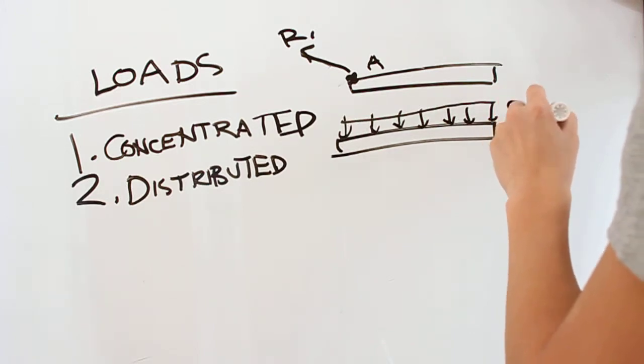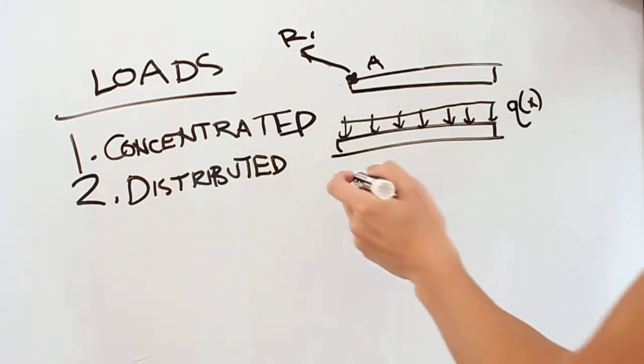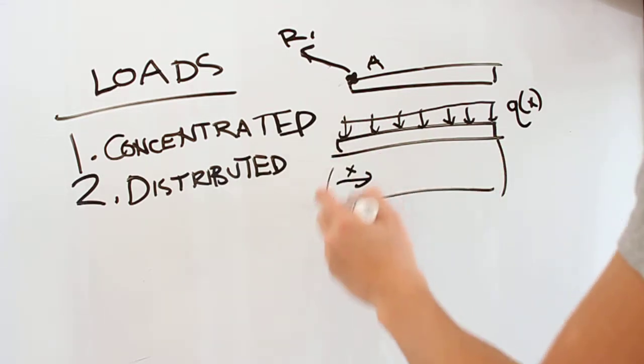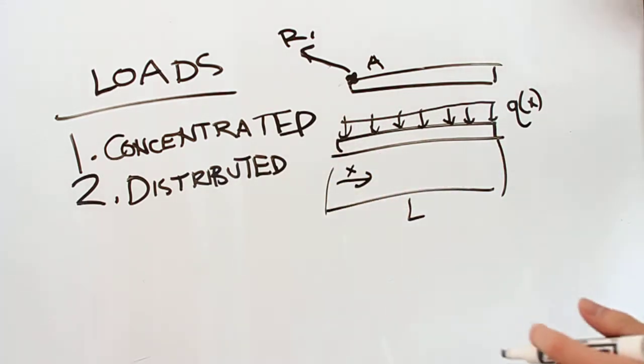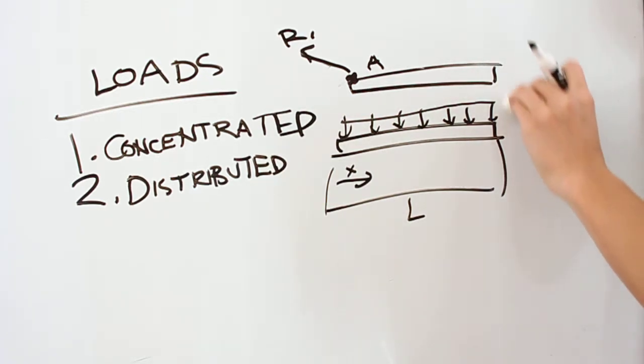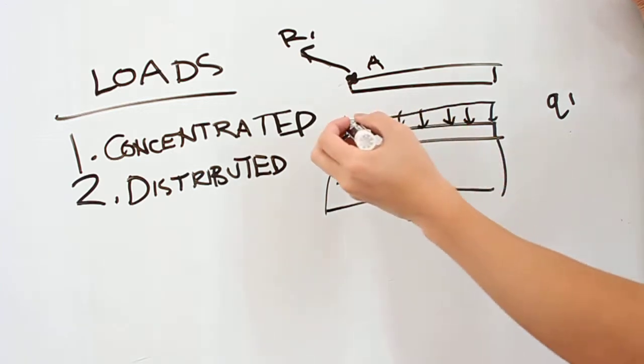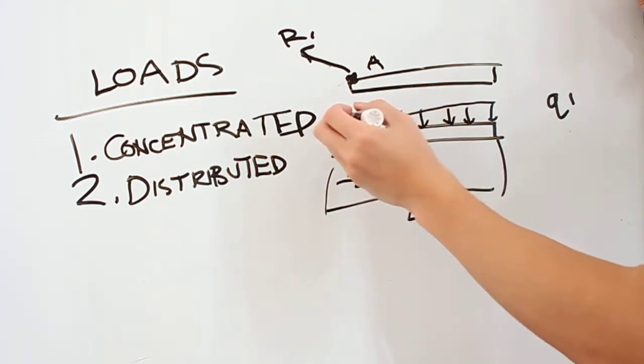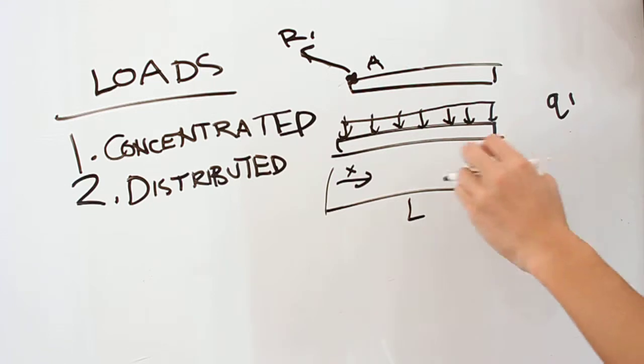So you usually call it a function of x, x being in this direction over a distance L. And if your distributed load is Q1 over that area, then you'll have Q1 over an L distance or your total force would be Q1 times L.